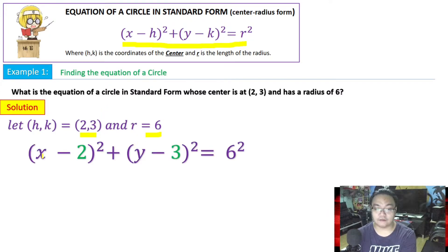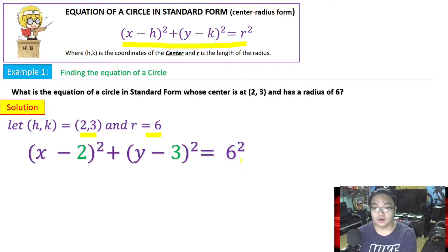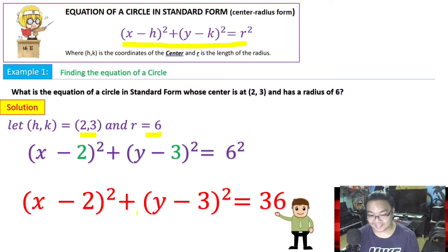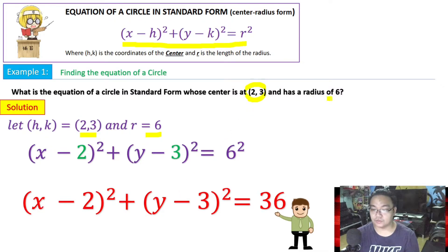Substituting those values into the standard form, we get (x minus 2) squared plus (y minus 3) squared equals 6 squared. Since we are asked to write this in standard form, we square 6 to get 36. Therefore: (x minus 2) squared plus (y minus 3) squared equals 36. This is the standard form of the equation whose center is at (2, 3) and has a radius of 6.